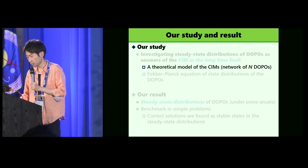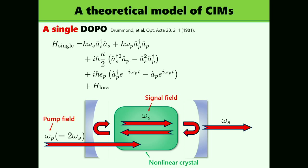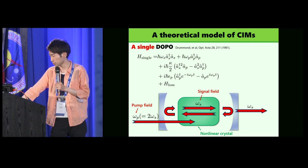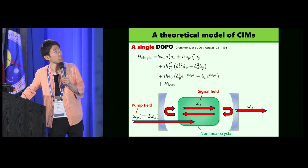So first, I explain a theoretical model of CIMs. Let's consider a single DOPO at first, and that is a cavity. There is a nonlinear crystal, and we have a signal field, and the pump field is injected from the outside of the cavity. The Hamiltonian is proposed in the literature, and the first line is for free Hamiltonian, and the second one is coupling of signal and pump, and the third is for pump field.